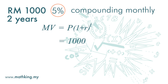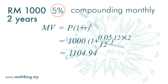We cannot just use five percent because five percent is for one year. If we compound interest monthly, then the interest is five percent divided by twelve. Since we compound it monthly for two years, the time period t here is twelve times two — that is 24 months. So after two years we will get one thousand one hundred and four ringgit 94 cents.